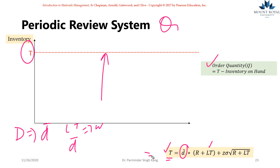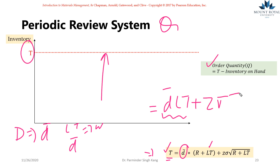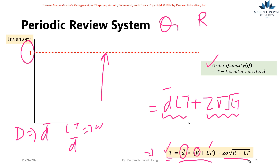Recall the EOQ model — the reorder point equation was D̄·LT plus Z·σ·√LT, covering average demand during lead time plus safety stock during lead time. Now in the periodic review system, the review period R is also fixed, so the formula expands to cover average demand during the review period plus lead time, and safety stock during the review period plus lead time.